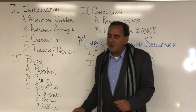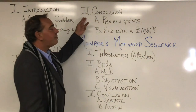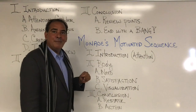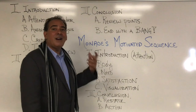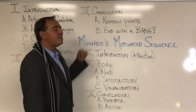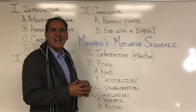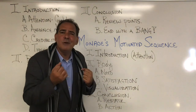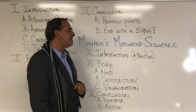After you're done with your solution steps, it's time to conclude. Your Roman numeral three is your conclusion. You're going to review your main points — today we talked about the problem, the cause, and the solution — and then end with some sort of bang, some sort of powerful final statement. Pathos appeals tend to work really well here; you pull at the emotional heartstrings of the audience just towards the end.